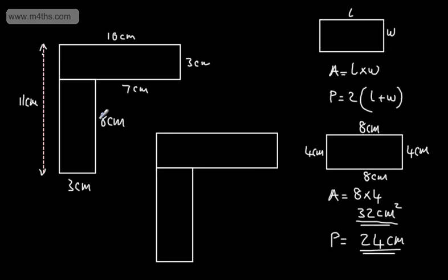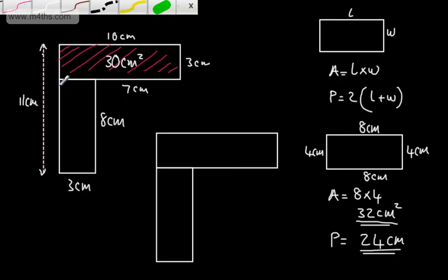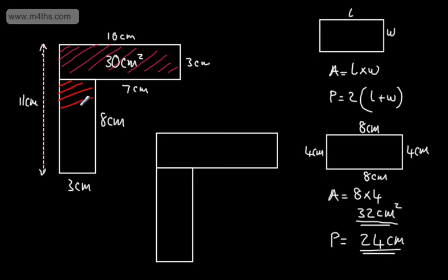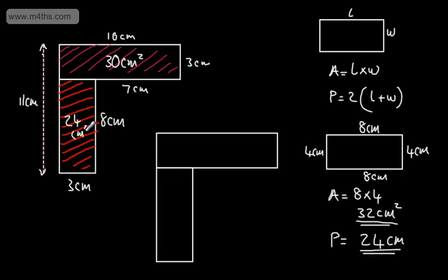To work out the area of the composite shape, we work out the area of each rectangle and add them together. The first rectangle has a length of 10 and a width of 3, so 10 times 3 gives 30 centimetres squared. The bottom rectangle is 8 by 3 — a common error is putting 11 by 3, but we only have this part. 8 times 3 is 24 centimetres squared.